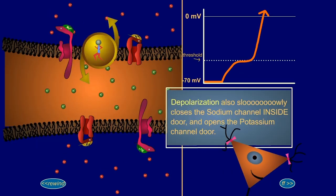Depolarization also slowly closes the sodium channel inside door and opens the potassium channel door.